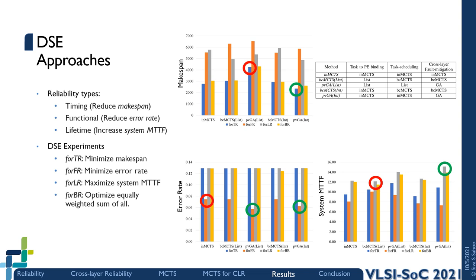We observed the combination of genetic algorithms and Monte Carlo tree search performing better in the optimization for makespan and system mean time to failure. For reducing the error rate, the combined approach provides results which are close to those of a purely genetic algorithm based design space exploration.